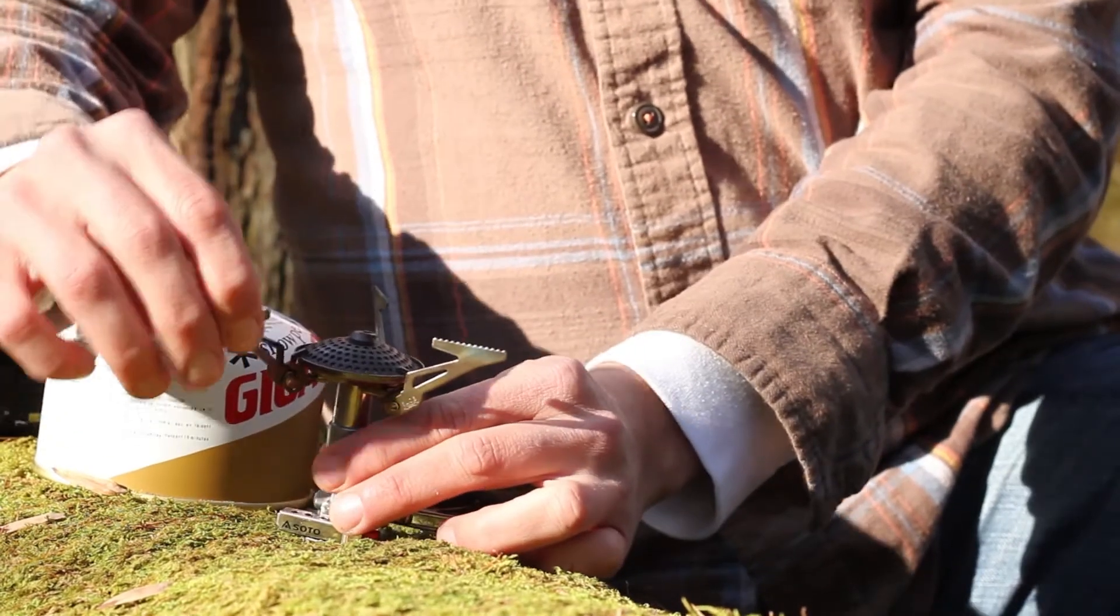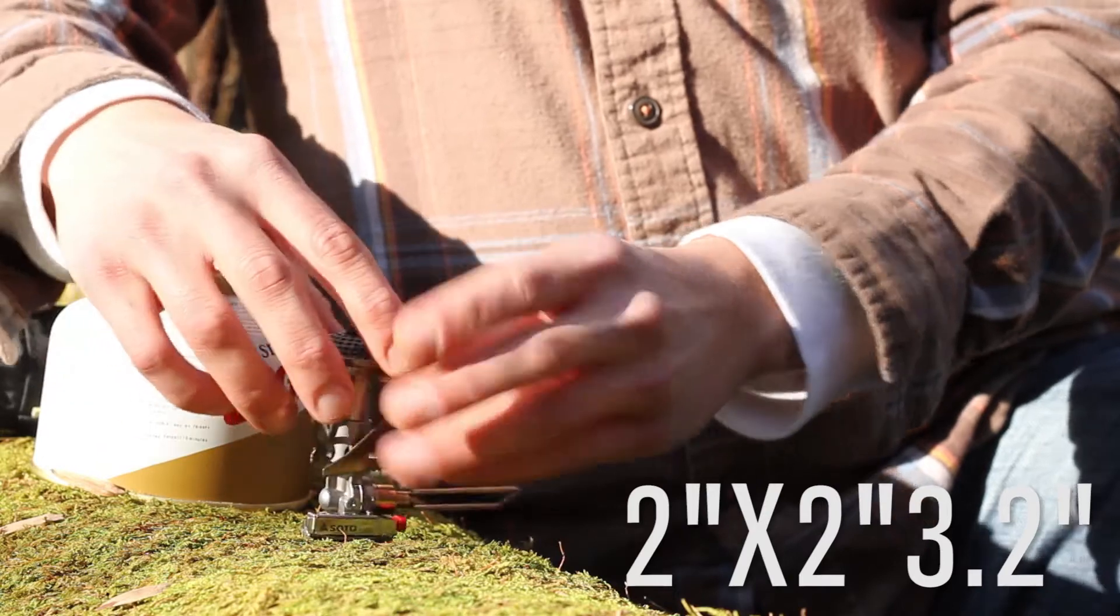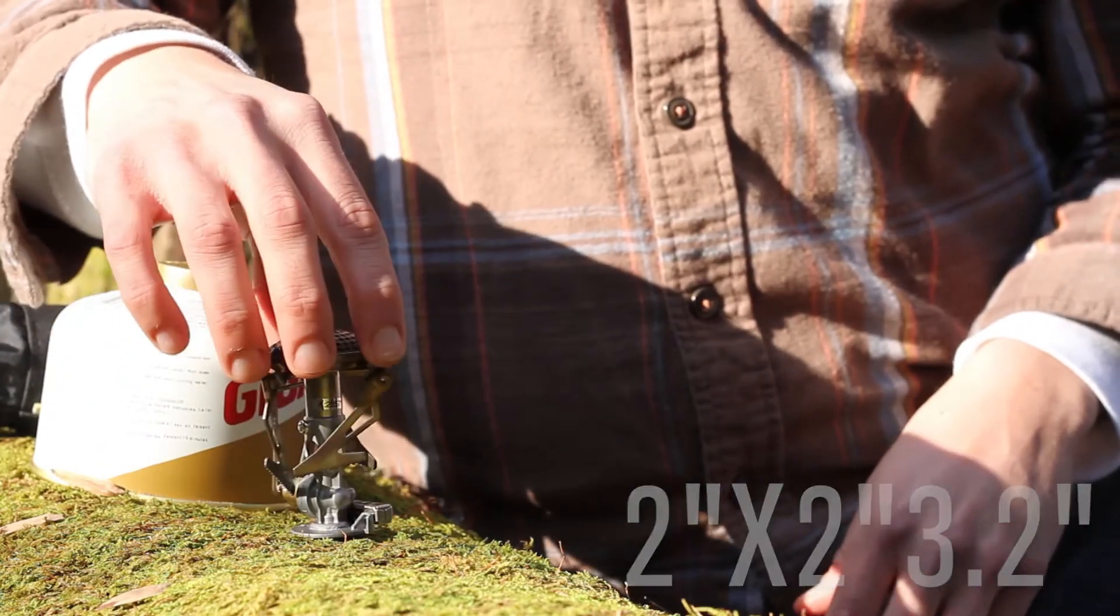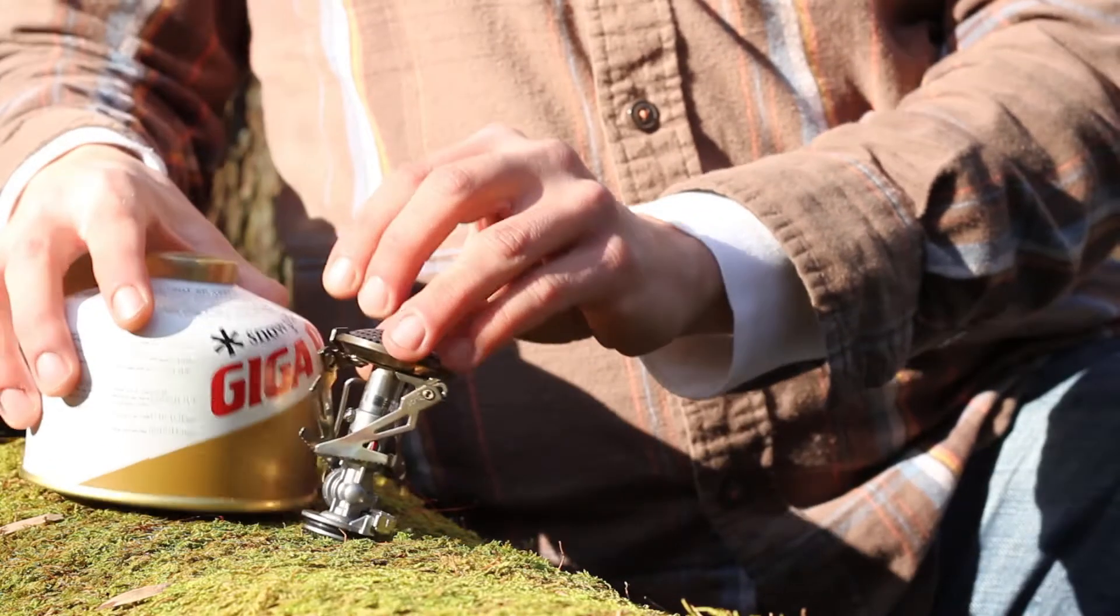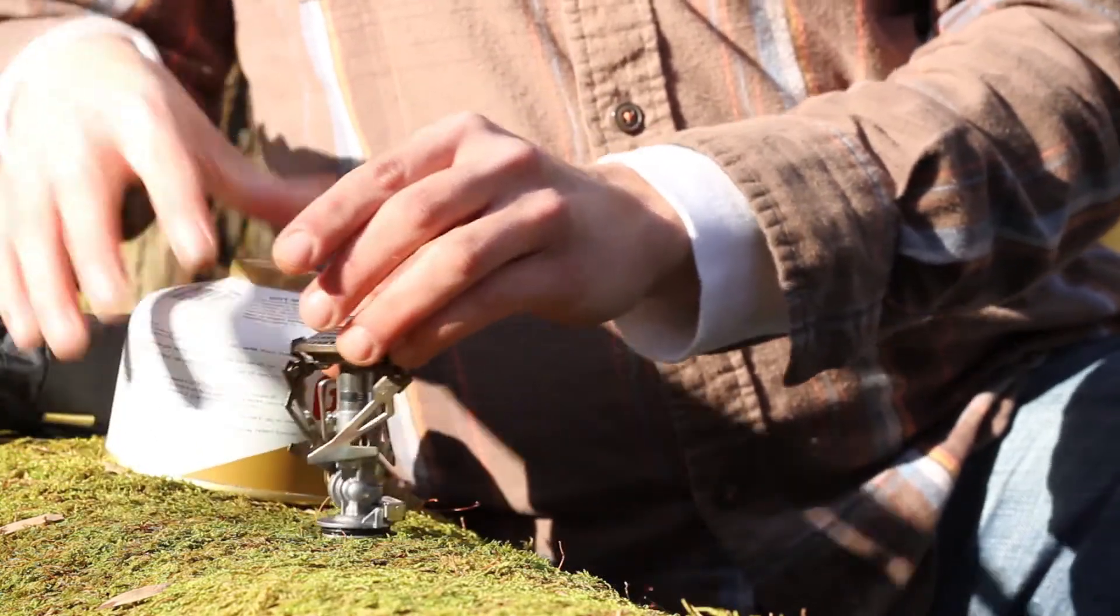Stowed dimensions, it's two inches by two inches by three point two inches. I don't know if you can see next to the stove for scale or next to this container canister. It's really small.